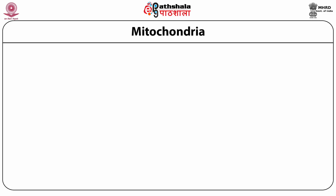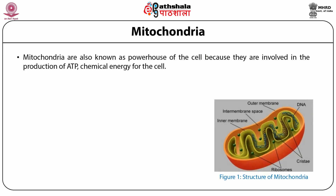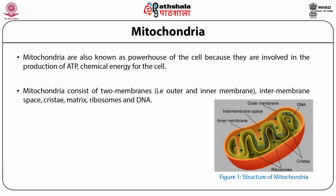Before going into the details of the electron transport system, it is important to understand the structure of mitochondria. Mitochondria is known as the powerhouse of the cell because it is responsible for the production of ATP, the chemical energy of the cell. Mitochondria consists of two membranes: an outer membrane and an inner membrane, with an intermembrane space between them, and a matrix. The matrix is separated by the mitochondrial inner membrane from the periplasmic space. Mitochondria also have ribosomes and their own DNA, which is why they are semi-autonomous.